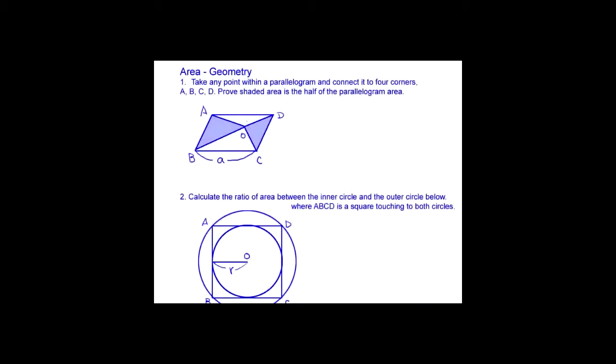Geometry area exercise. Take any point within a parallelogram and connect it to four corners ABCD. Prove shaded area is half of the parallelogram area. Now we draw a line and define the height which is from this point to this point and this point to this point.